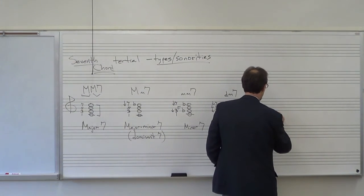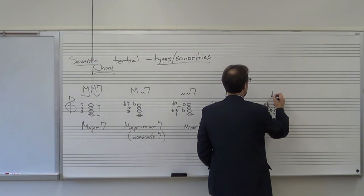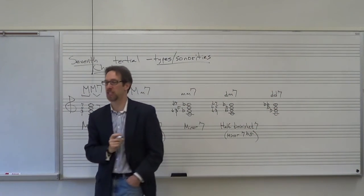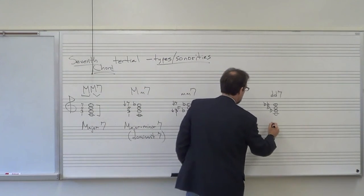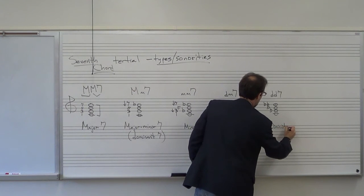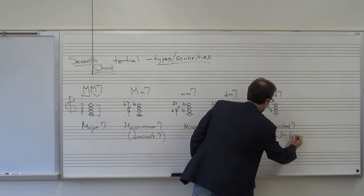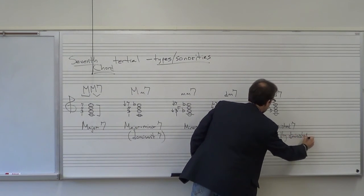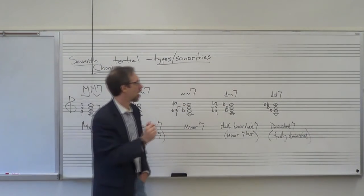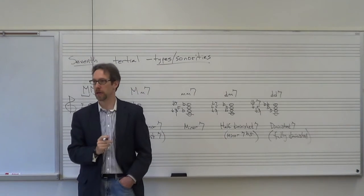Our last seventh chord involves a double-lowered seventh. This is a diminished triad with a diminished seventh, and they call this either a diminished seventh chord or fully diminished. The formula is 1, lowered third, lowered fifth, double-lowered seventh.